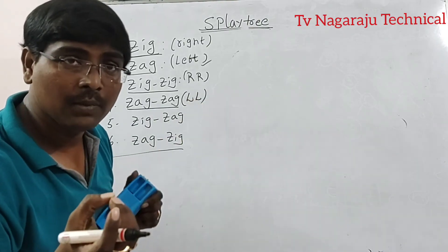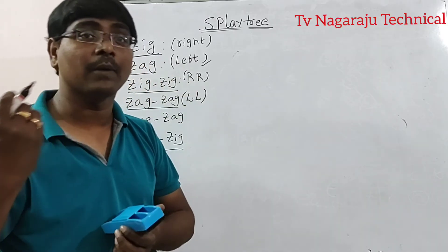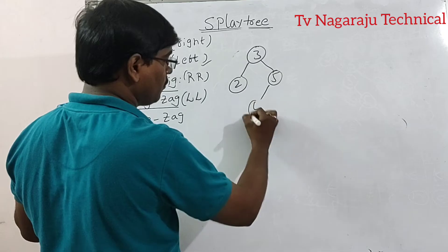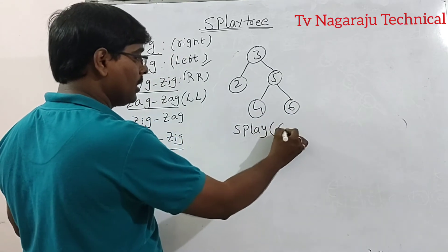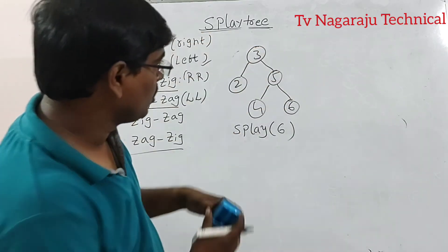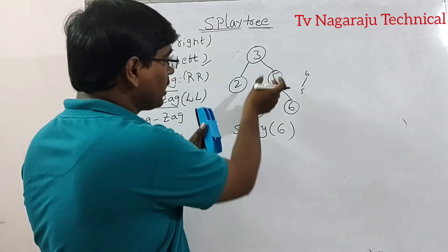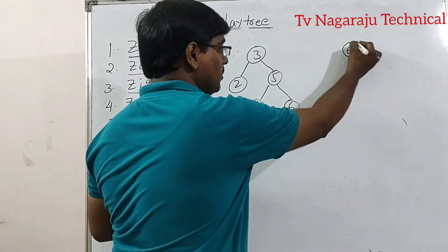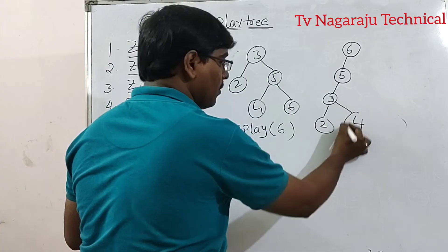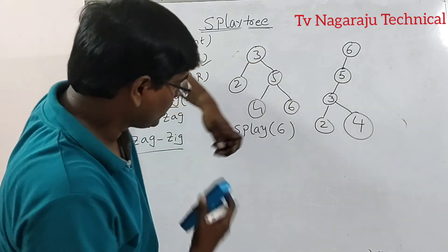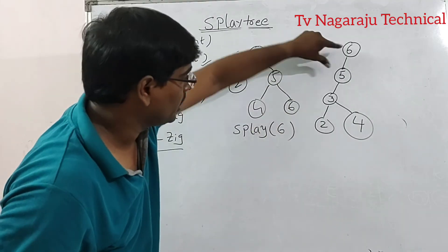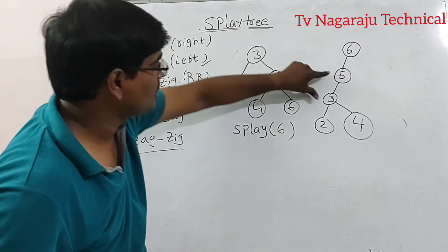Now consider the Zag-Zag rotation — left-left. The node moves two positions to the left from its current position. For example, consider the tree 3, 2, 5, 4, 6. Perform splay(6): by performing the rotation — 6 moves up, 5 is at this position; in the next iteration, 3 is the chain, so 6 and 5 are left-rotated. The position of 4 is placed correctly. Now observe that 6 is moved to the root.